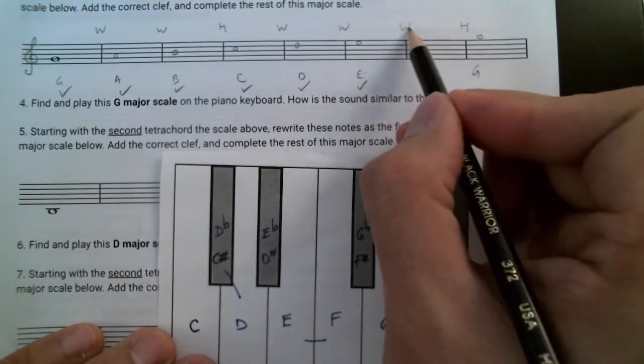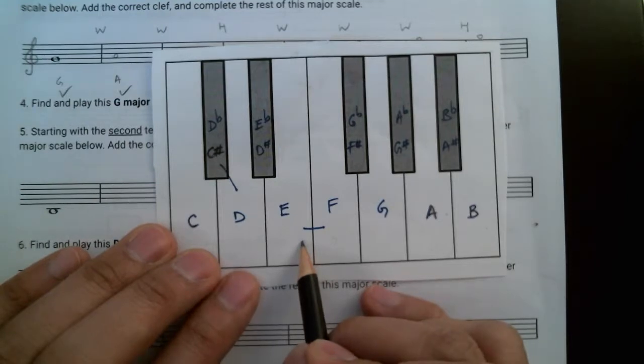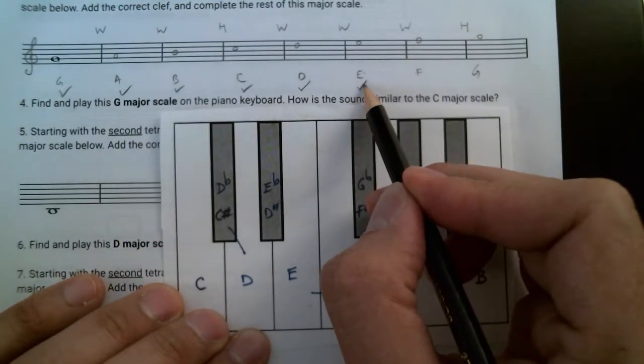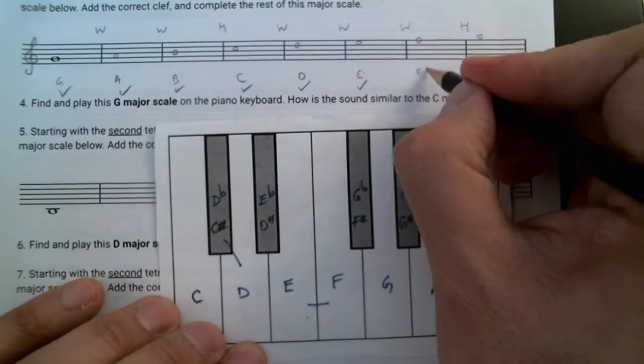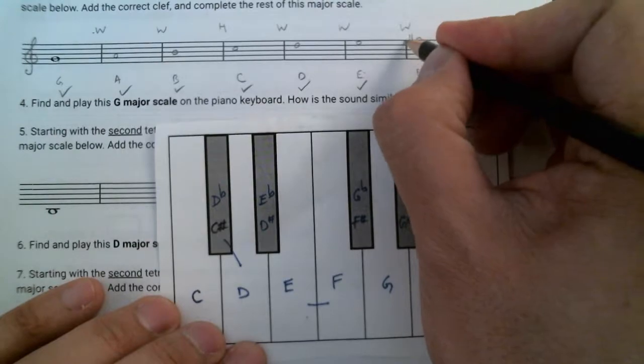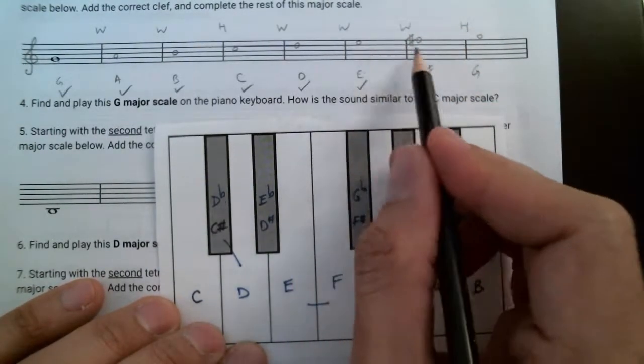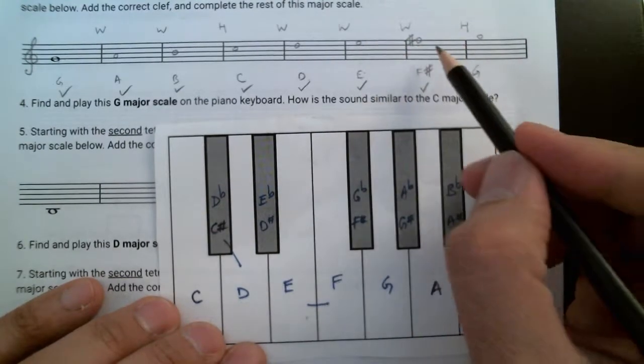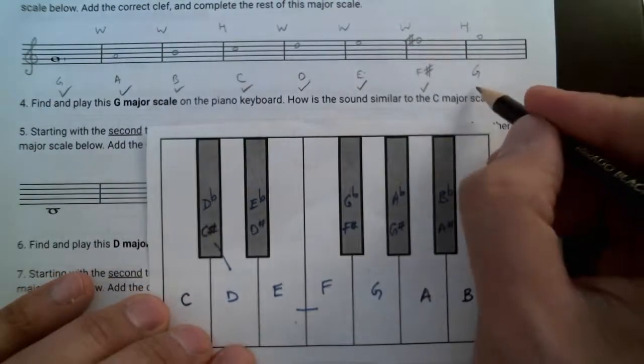From E to F, we need a whole step. E to F, but E to F is a half step, so in order to make this a whole step, I can't change the E because I already have a check mark here. So I need to raise the F to F sharp, and then that makes E to F sharp a whole step. Finally, from F sharp to G, we need a half step, and from F sharp to G, indeed, it's a half step, so that's done.